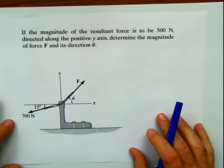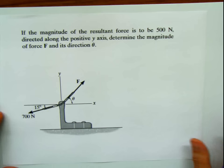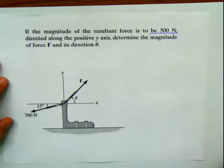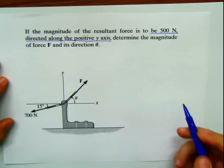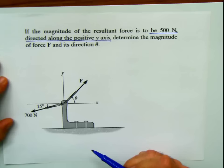The first thing you have to do, as always, is learn how to pick up the clues from the problem. The first clue is the magnitude of the resultant force. We also know its direction, because it says it's directed along the positive y-axis — meaning the resultant force is going to be acting in this axis, pointing upward.